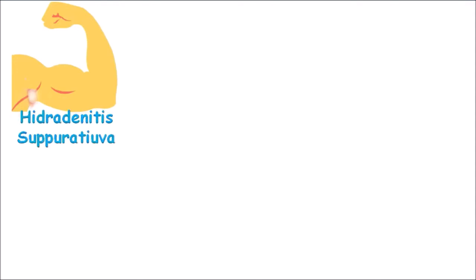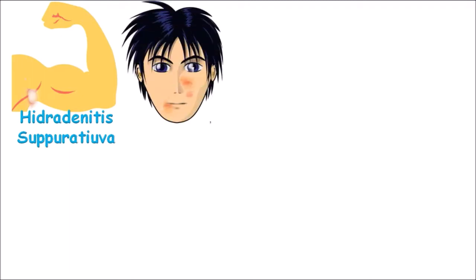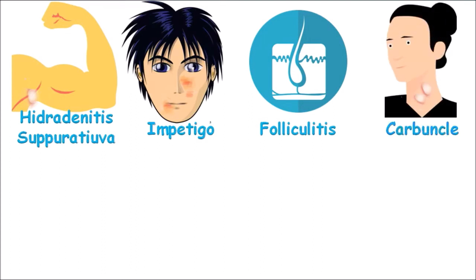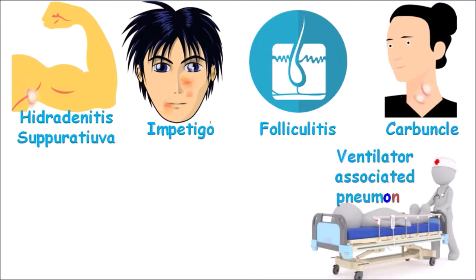Staphylococcus aureus may cause hidradenitis suppurativa, which is an infection in the axilla. It may also cause impetigo, which presents as honey-colored crusts most often in children on the face. It may also cause folliculitis, or infection of the hair follicles. Sometimes it causes carbuncles, which are very painful lesions in the lower part of the neck.